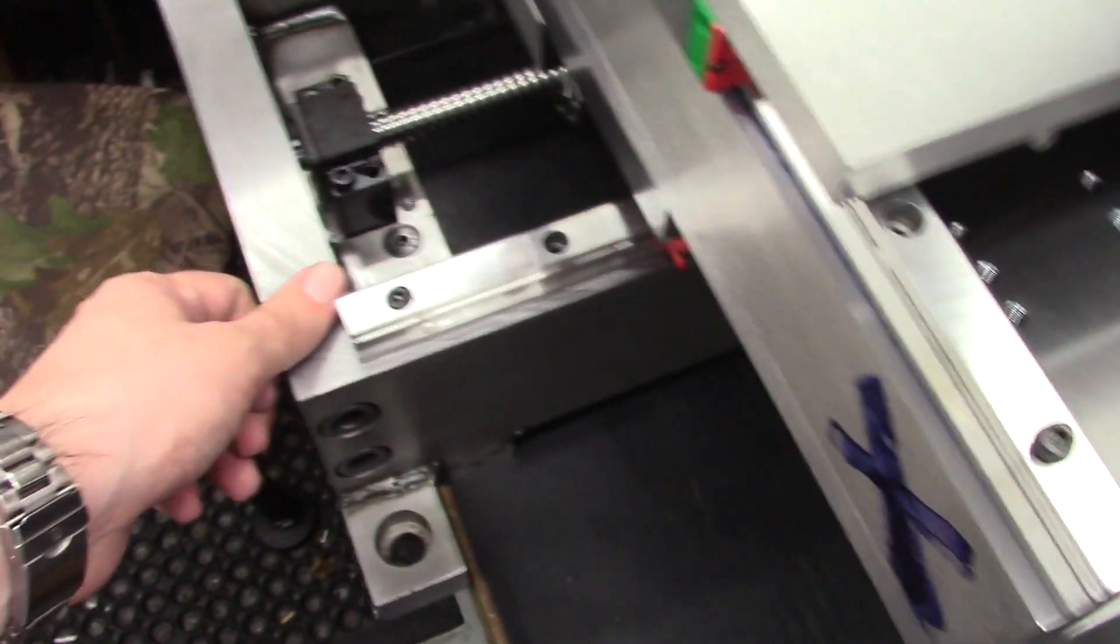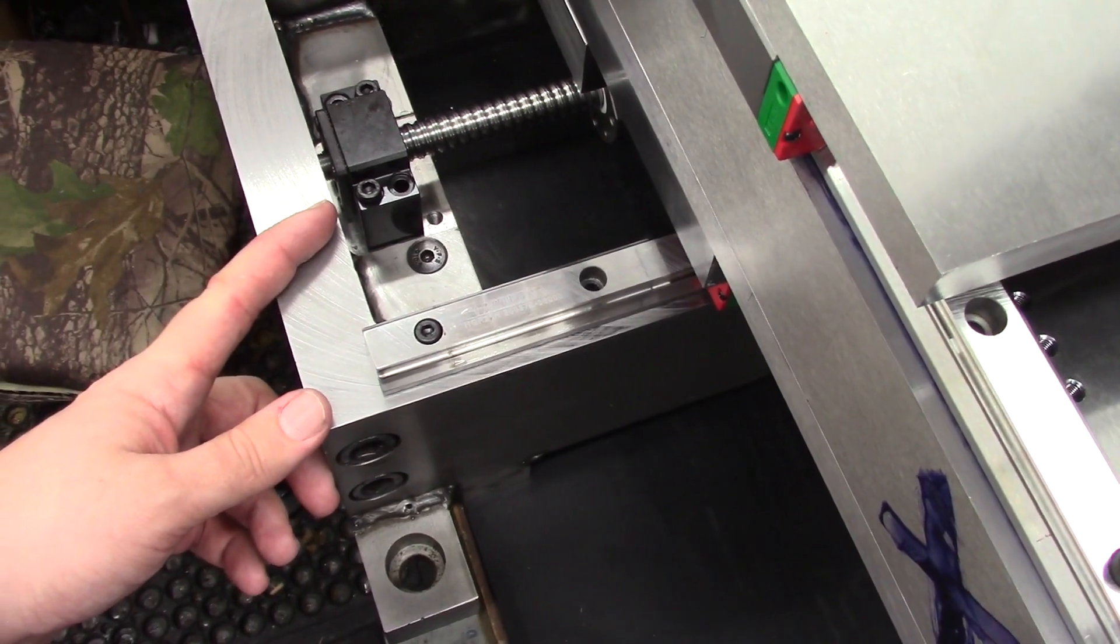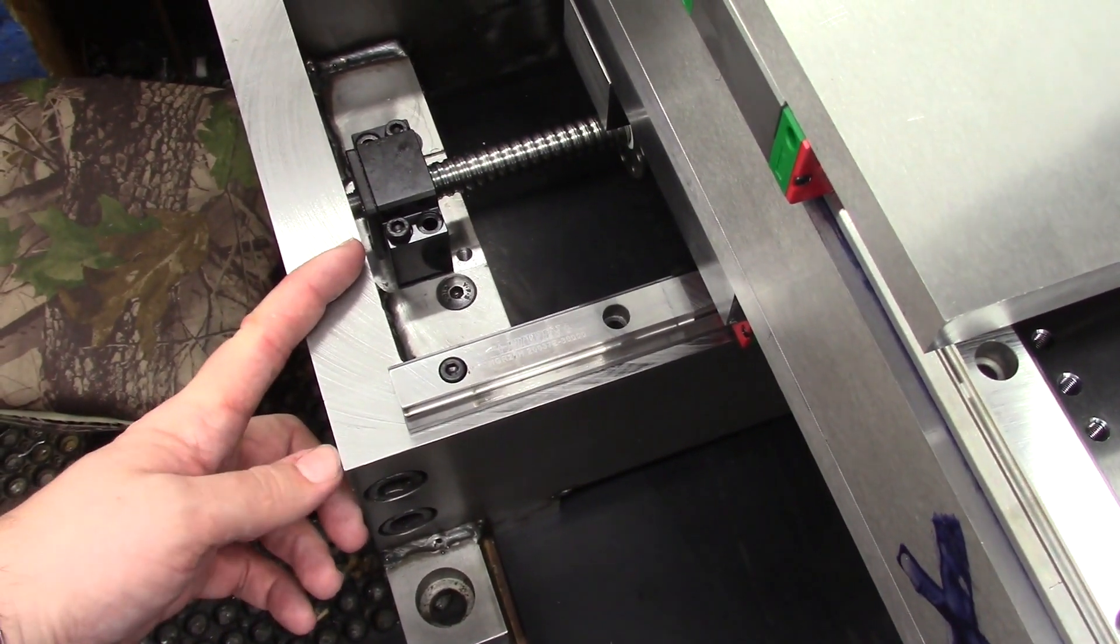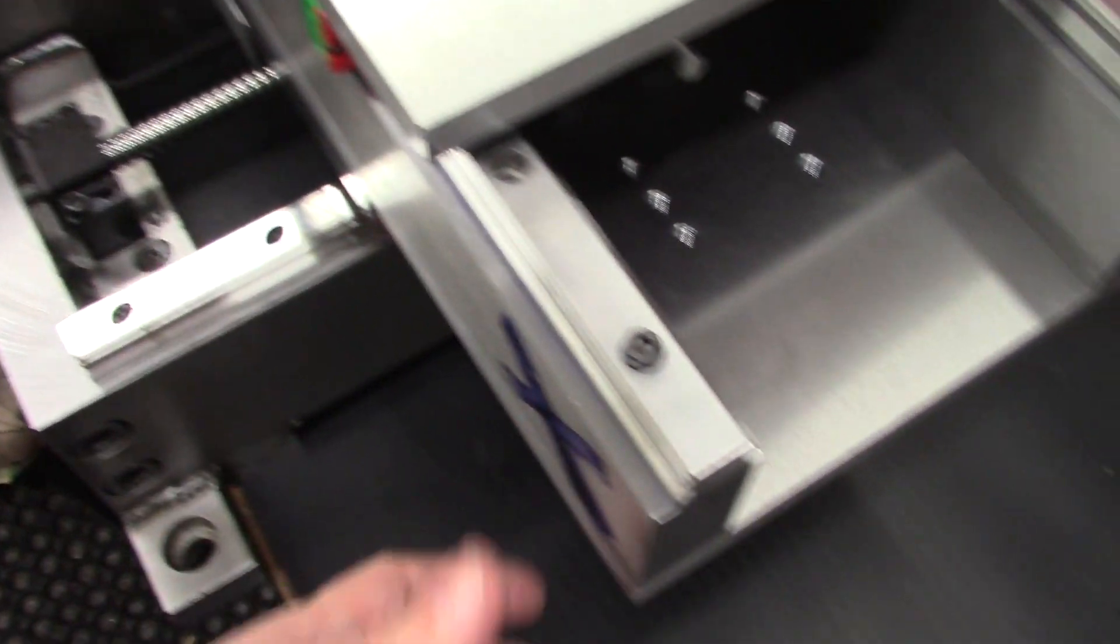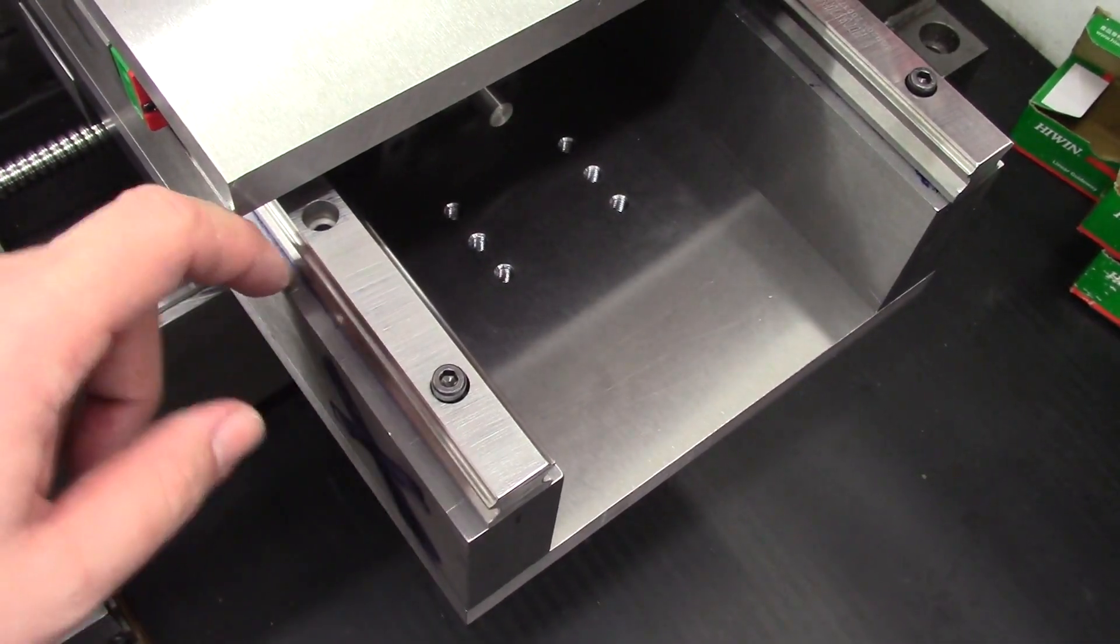Although raw stock is much cheaper, it's also much more time consuming to machine and make square and flat and all those things. So buying ground stock, you start off with nice square pieces of metal, so you can just drill and thread your holes, mount everything directly to the plate without having to do much machining.